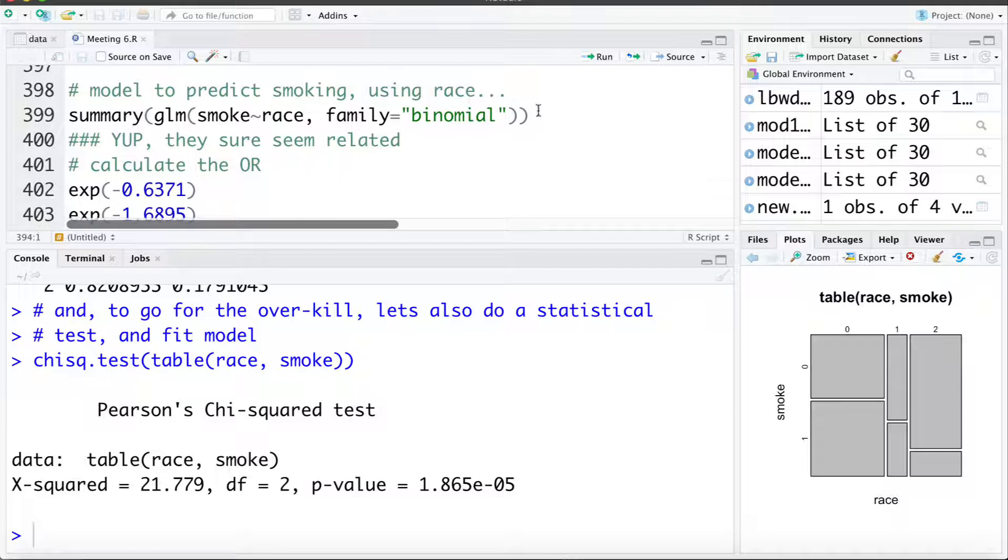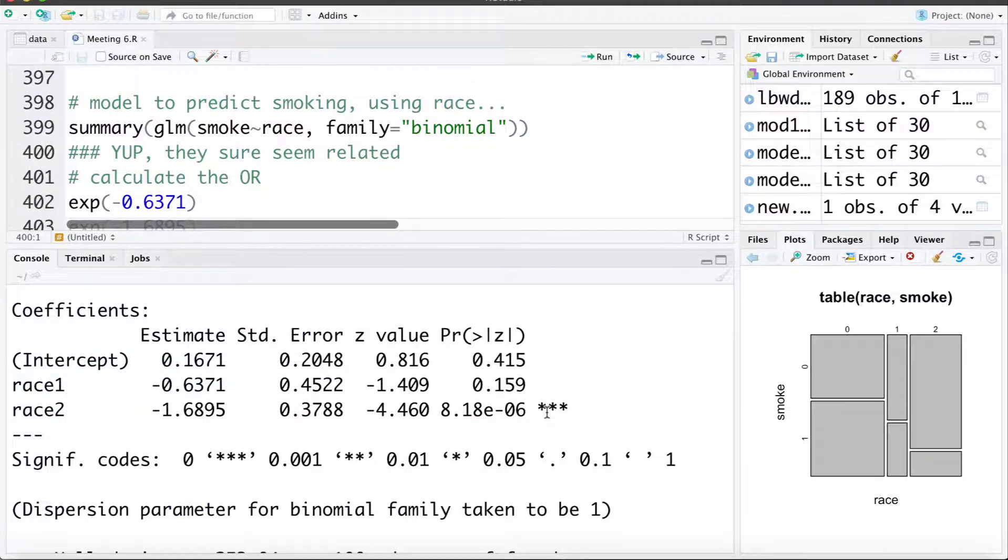Now just one final way we can get at checking this. We can build a model that looks at can we use race to predict whether or not they smoke. If race can predict if they smoke or not that tells us there's an association. So here I'm going to fit a logistic model to do that. So we can see that race at least seems to be somewhat a significant predictor of smoking and recall if we exponentiate these it's going to give us odds ratios. So exponentiating that first coefficient is going to give us the odds of smoking for race category black versus white.